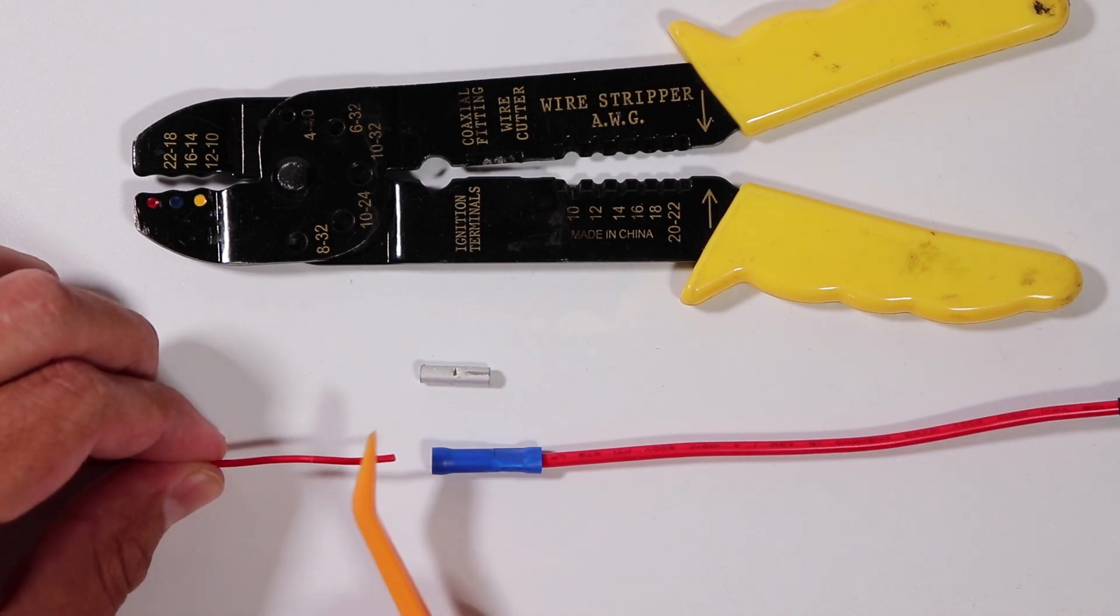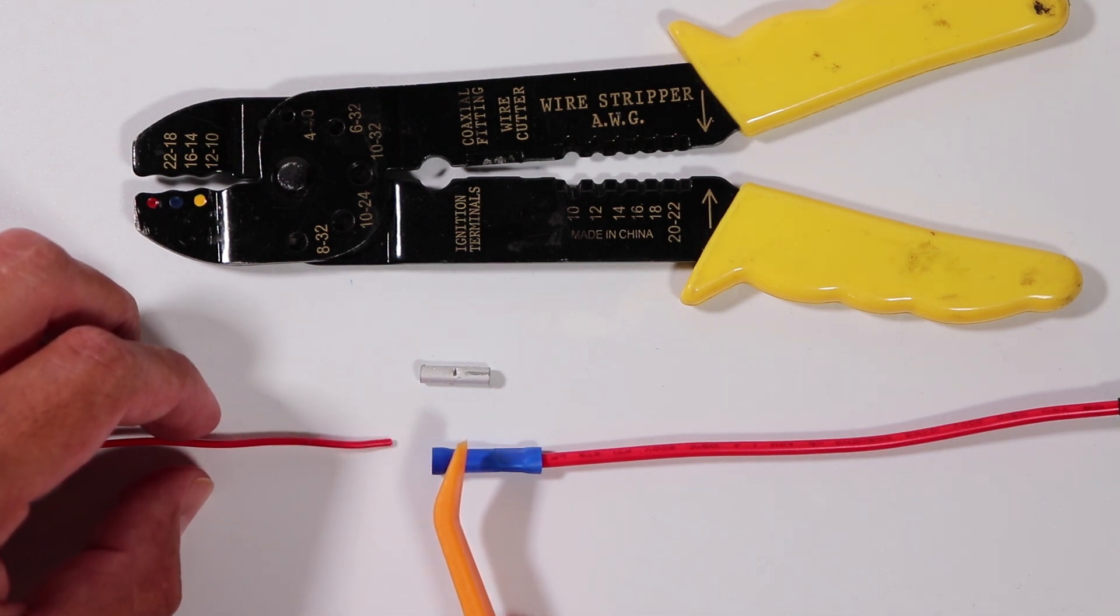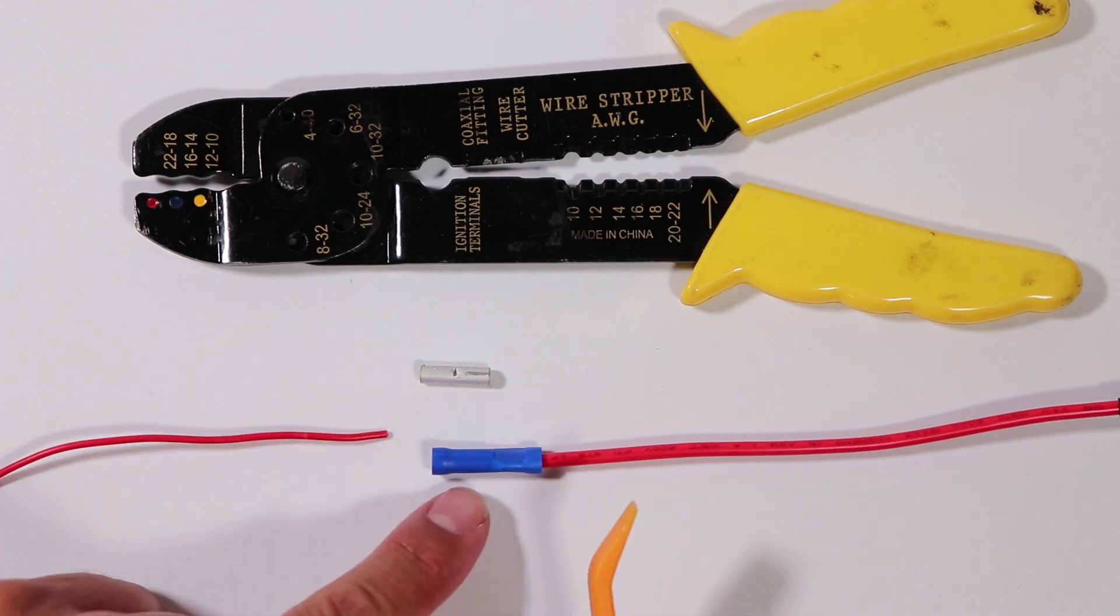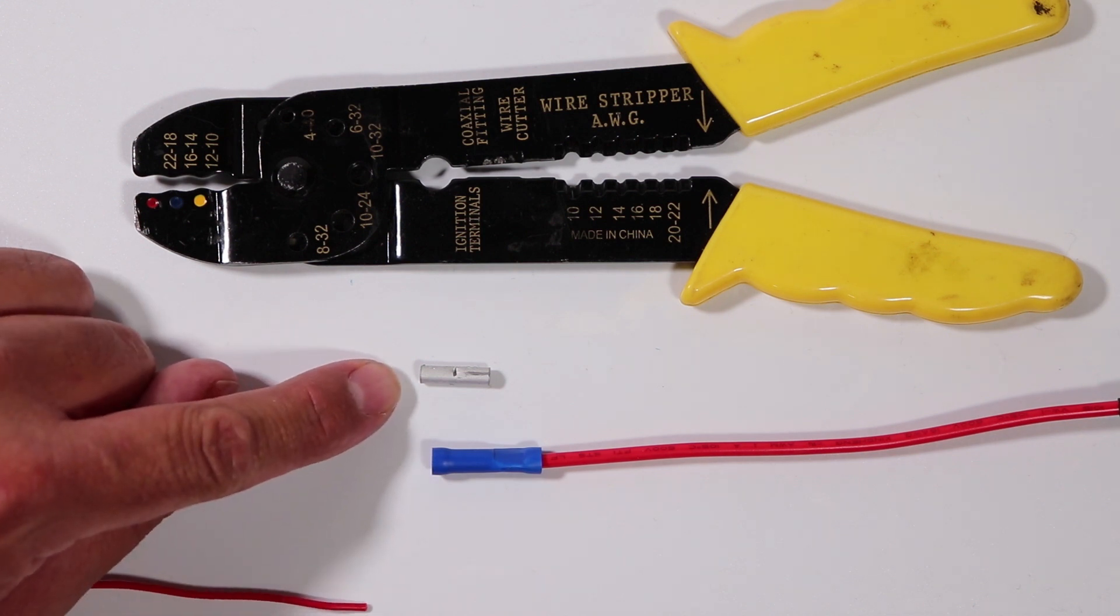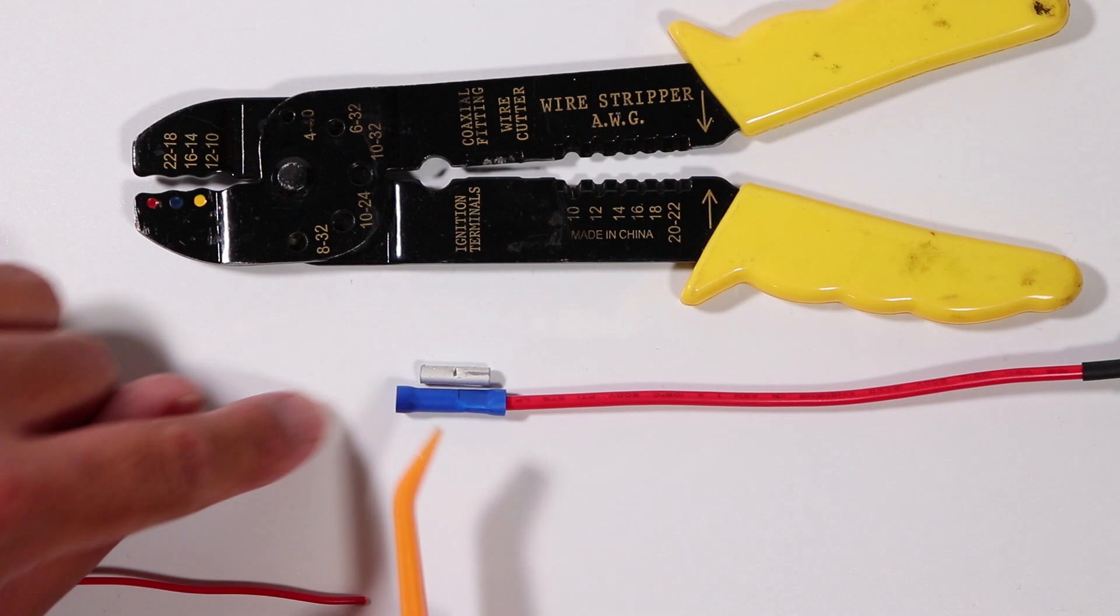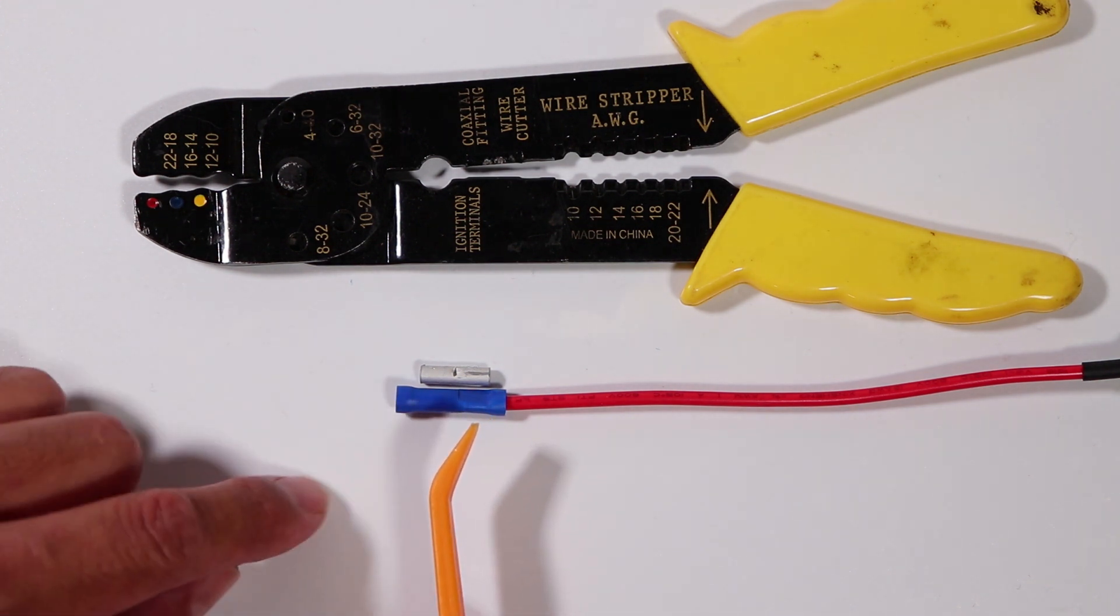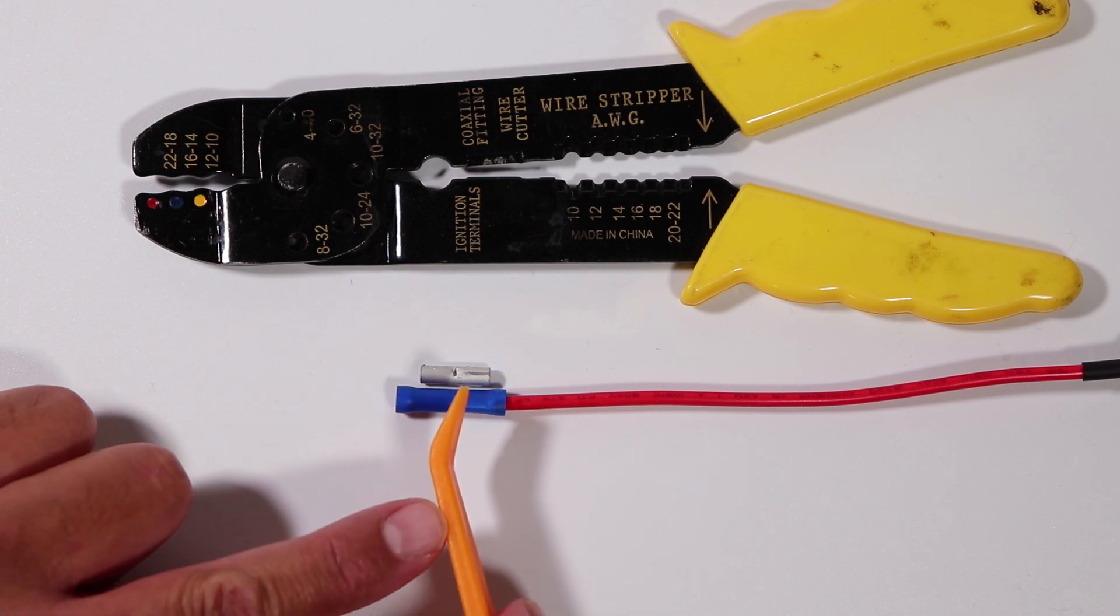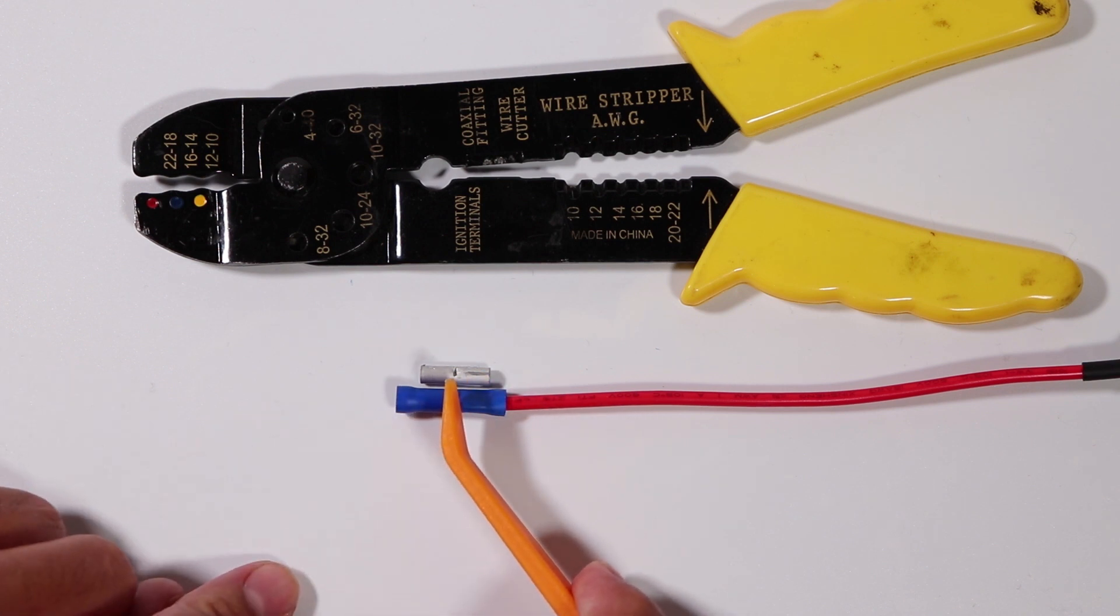I'm going to be attaching this wire to this splice, and before I do that, I want to show you what's inside of this splice. This blue thing right here is called a splice. What's inside of there, it's this little metal cylinder. Now, this metal cylinder is roughly in the middle of this blue portion right here, which means that this wire has already occupied, the red wire is already occupying half of that cylinder.